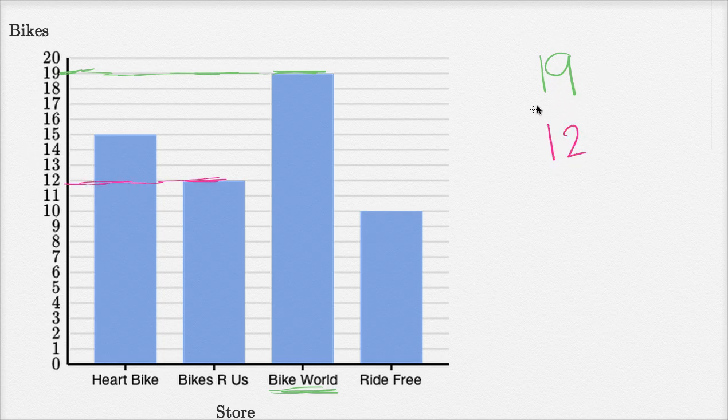So how many more does Bike World have than Bikes Are Us? Well, we can just subtract Bikes Are Us's number of bikes from Bike World, 19 minus 12. What is that going to be?